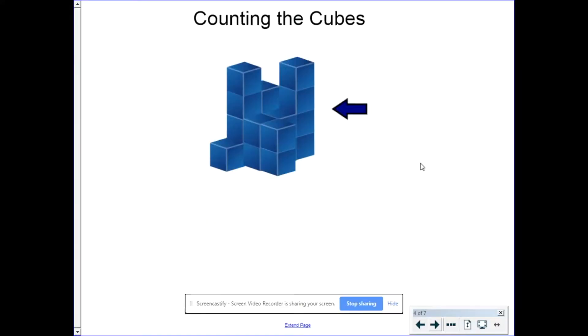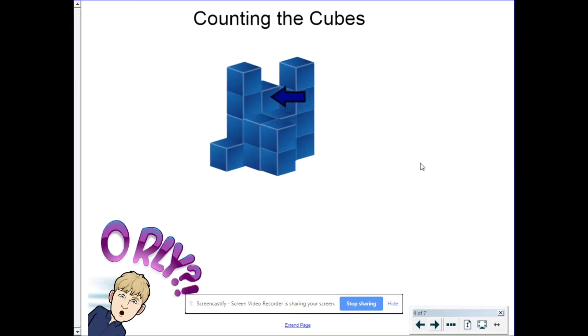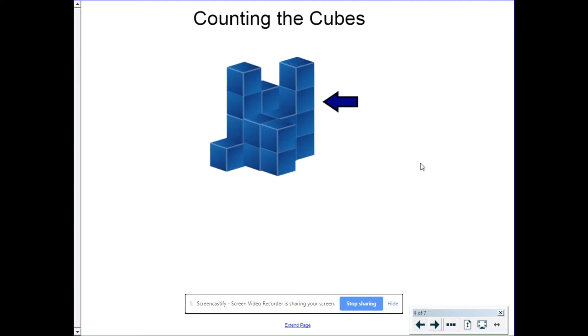Well, this is incorrect because there are actually cubes that you cannot see. For example, if you look at this cube here and this cube back here, there needs to be cubes underneath them. Otherwise, they would fall down.